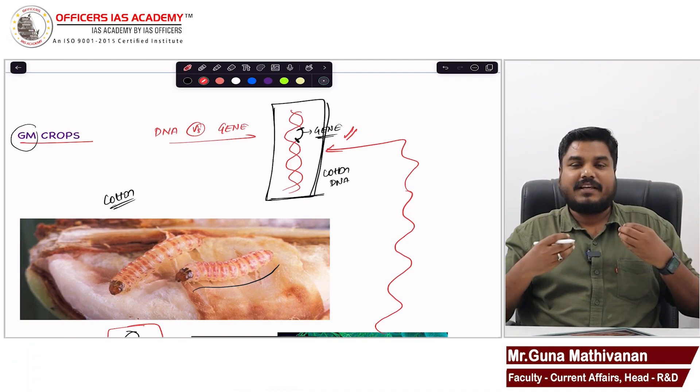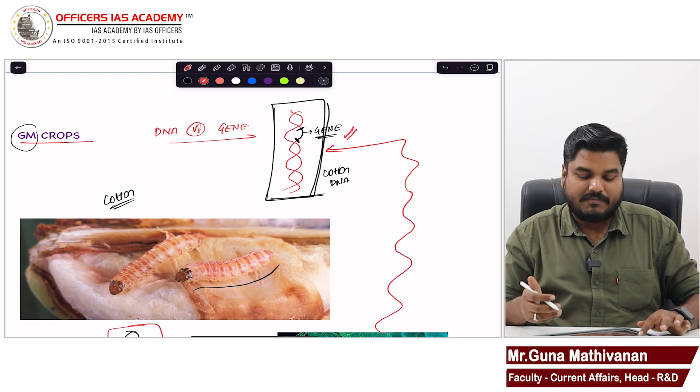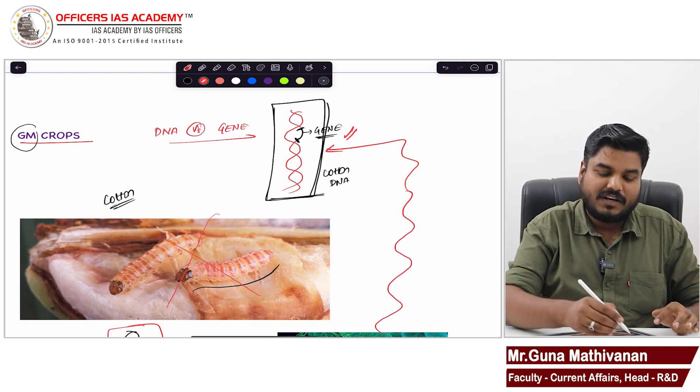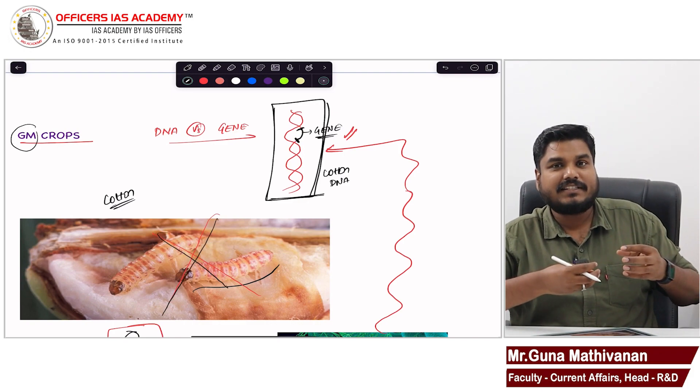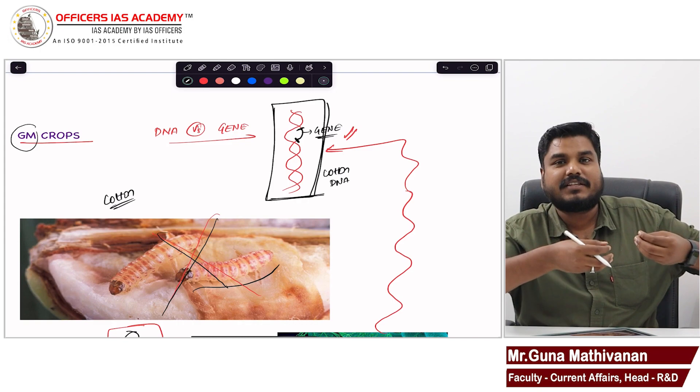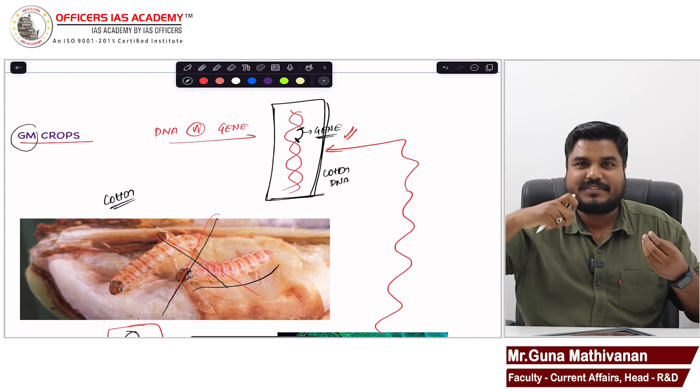Now assume I am that cotton. Some bacteria's gene is added to me. Adding that gene to this cotton, that cotton has got an ability to secrete some poison. Why should that cotton secrete poison? When the cotton is able to secrete that poison, this pink bollworm will not come closer to cotton at all because now the cotton has the ability to produce some poison.